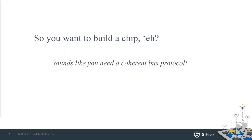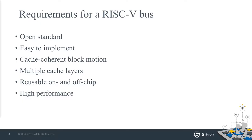We already knew we wanted to start small and build bigger chips as we went on. So we were going to need a bus that did coherent cache block motion and worked for small chips and large chips. We sat down and asked ourselves, what are we going to need? We knew right away that since the whole goal of SCI-5 and RISC-V in general is to have an open ecosystem, we were going to need it to be an open standard, whatever we picked for a bus protocol.